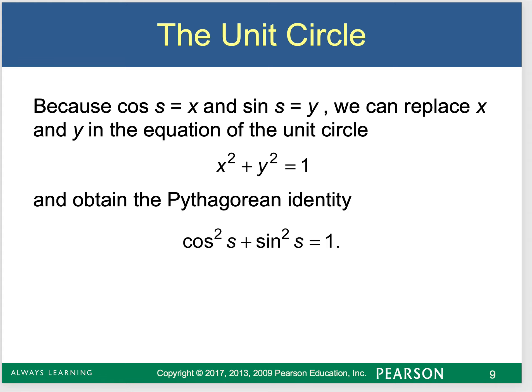Because cosine is x and sine is y, we can replace x squared plus y squared equals 1, which is the Pythagorean theorem, with cosine squared plus sine squared equals 1. This is called a Pythagorean identity. We're going to be using this identity a good bit as the course progresses.